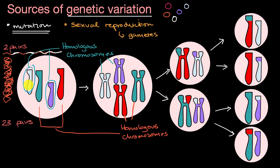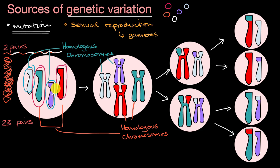On one of these chromosomes, you can actually have thousands of genes being coded. So if you were to pick this chromosome and this chromosome right over here, they would be coding for the same genes because they're homologous — but once again, they could have different alleles, different versions of those genes. Similarly, this chromosome and this chromosome are also homologous, also coding for the same genes.